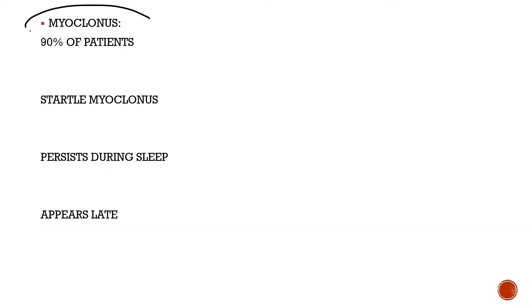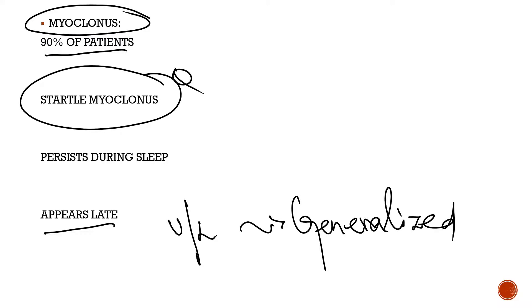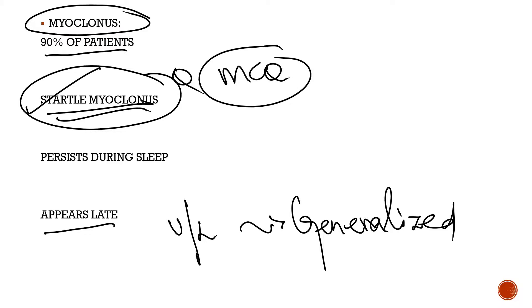Myoclonus occurs in 90% of CJD patients and appears late in the disease course. It is initially unilateral and later becomes generalized. A very important point is that myoclonus in CJD is triggered or exacerbated by startle — a sudden loud noise will increase it. Unlike other involuntary movements, this myoclonus persists even during sleep. While myoclonus can occur in hypoxic or metabolic encephalopathy, the constellation of rapidly progressive dementia, myoclonus, and psychiatric syndrome should raise CJD as the top differential.